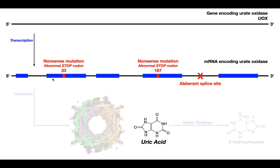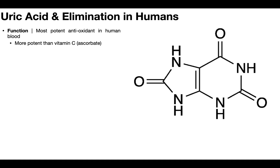Any way you look at it, humans do not make functional urate oxidase, which allows levels of uric acid to build up. Because uric acid is a metabolic dead end, it must be eliminated — not through metabolism, but through elimination via the kidneys or through the feces. Importantly, uric acid in humans actually functions as the most potent antioxidant in the blood.